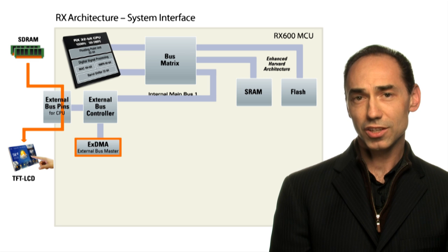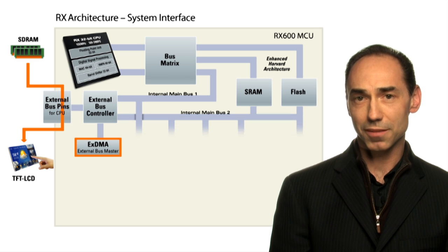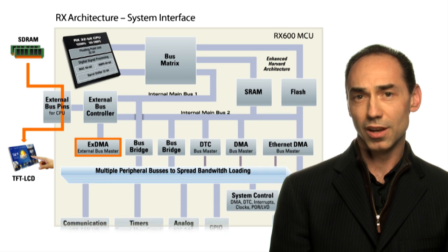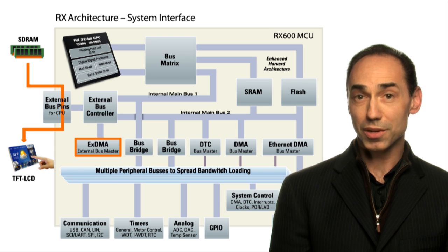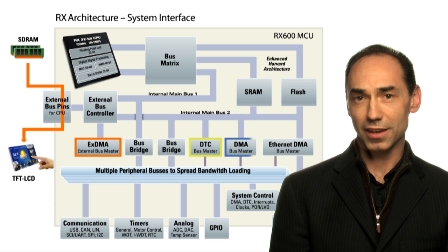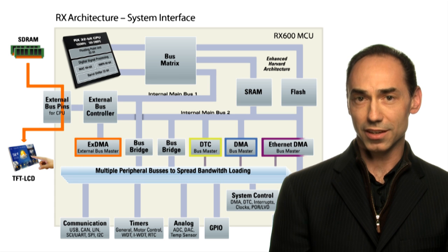In addition to MainBus 1, there is also a second MainBus 2 and six peripheral buses. To help move data around independently, there are three more bus masters: the DTC, the DMA, and the Ethernet DMA.